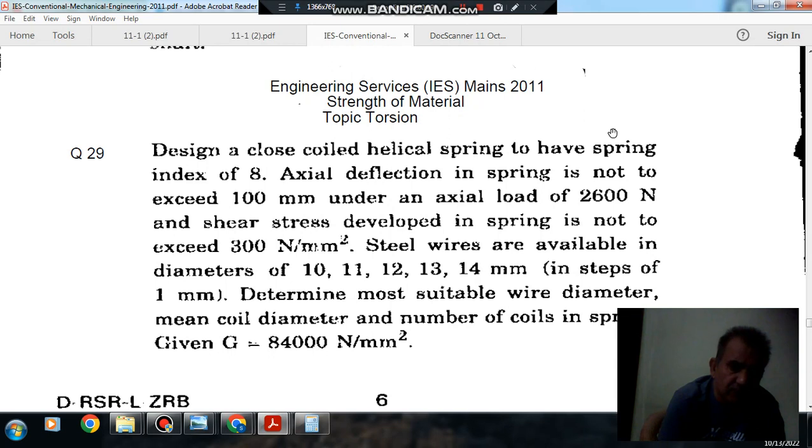Question number 29 from Engineering Services Mains 2011: Design a closed coiled helical spring to have a spring index of 8. Axial deflection in spring is not to exceed 100 mm under an axial load of 2600 N, and shear stress developed in the spring is not to exceed 300 N per mm square.